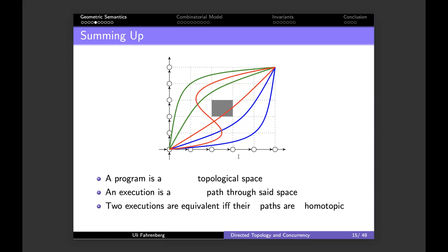However, I've only told you half the story, because we've forgotten the direction of time. Executions are not just paths — they are directed paths. Programs are not just spaces but directed spaces. We need notions of direction of time. Two executions are equivalent if their directed paths are di-homotopic.